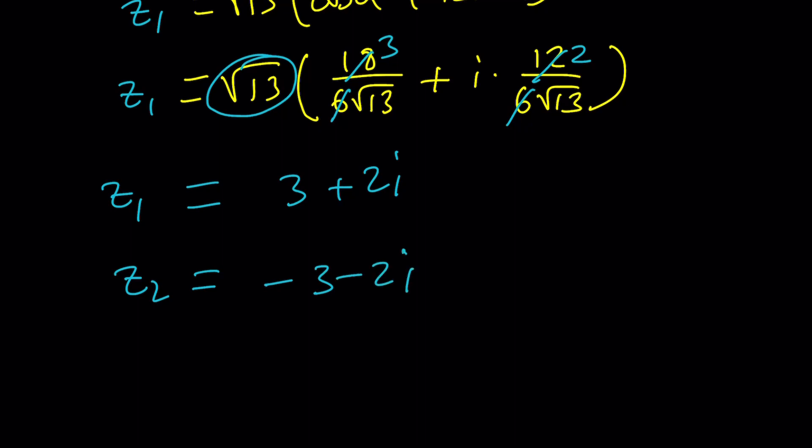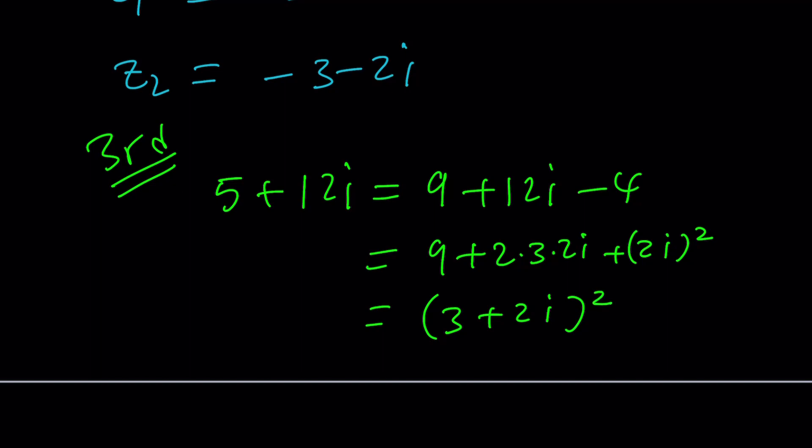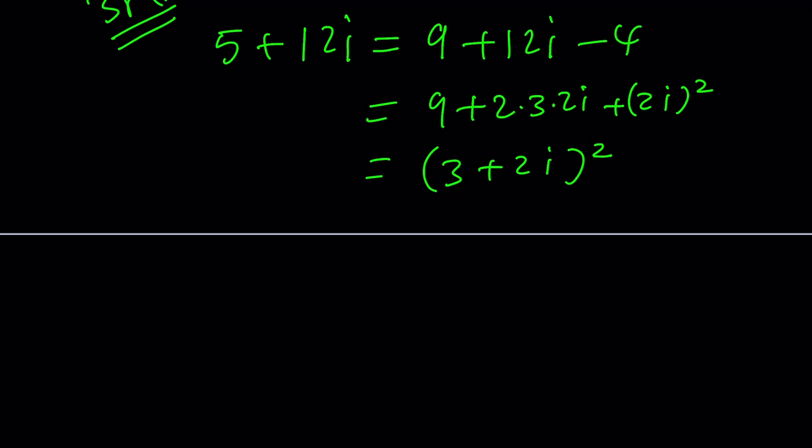The third method now. Ready? The third method doesn't always work, I gotta tell you. But when it does, it works great. 5, I can break it down into 9 minus 4. Because now this is 9 plus 2 times 3 times 2i. And this is 2i squared. Because that's negative 4. And now this becomes 3 plus 2i squared. So 5 plus 12i is 3 plus 2i squared. Therefore, square root of 5 plus 12i is going to be 3 plus 2i. Because remember, we said this is equal to z squared. So if this is equal to z squared, square root both sides, you're going to get z equals 3 plus 2i. Of course, with a plus minus sign in the front, because there are two numbers whose square equals z squared.